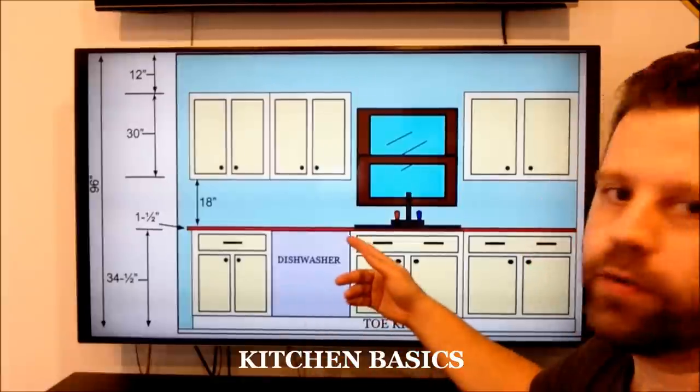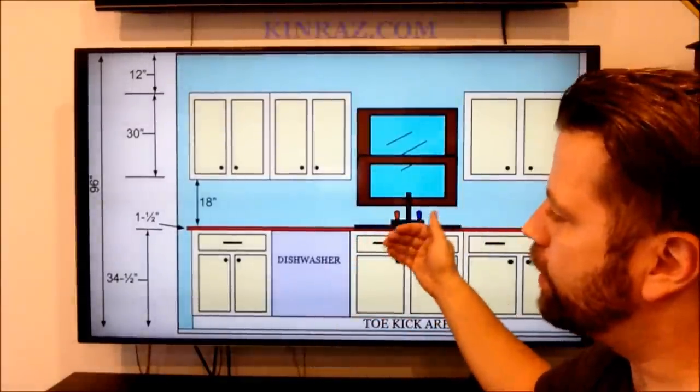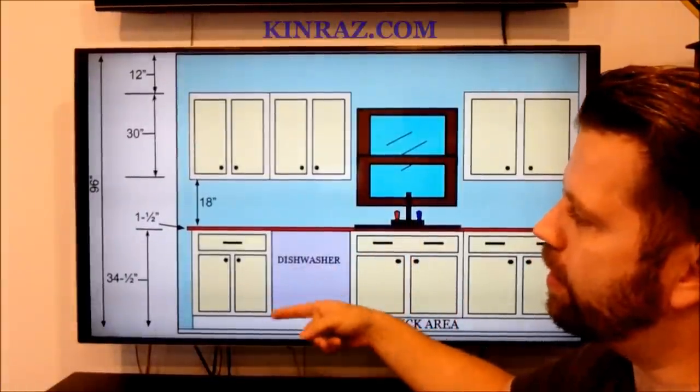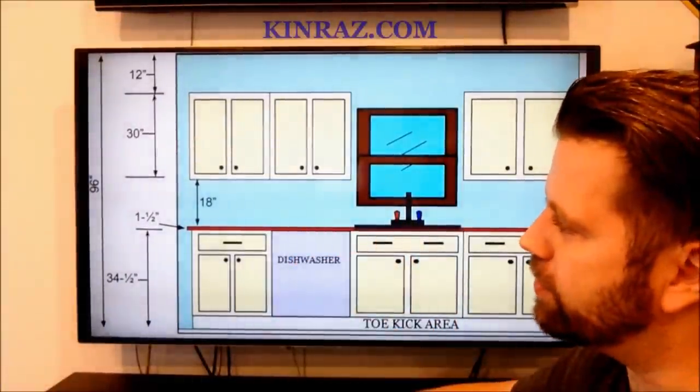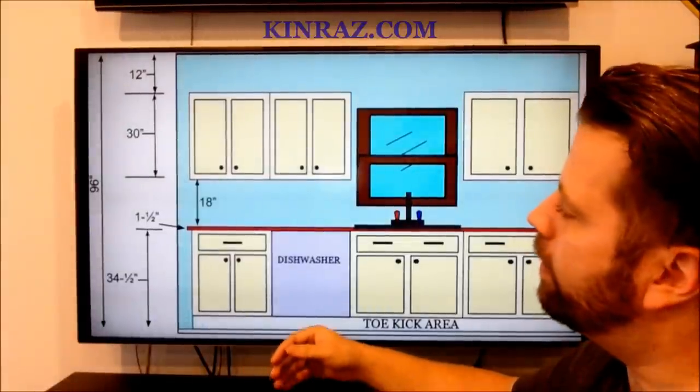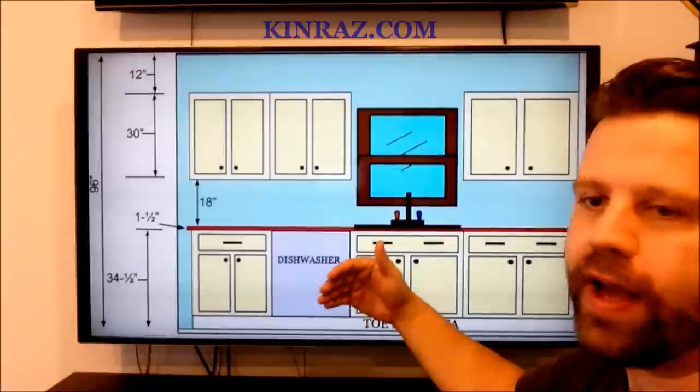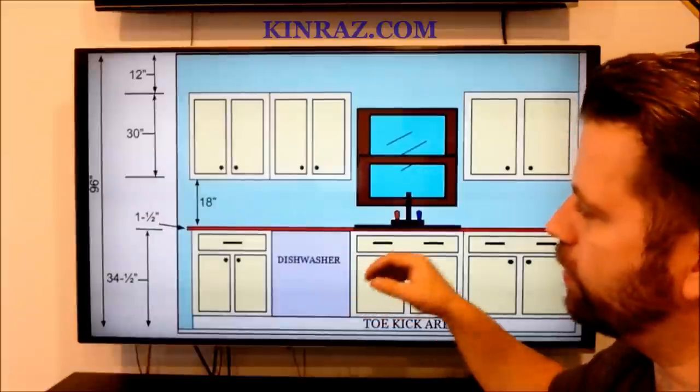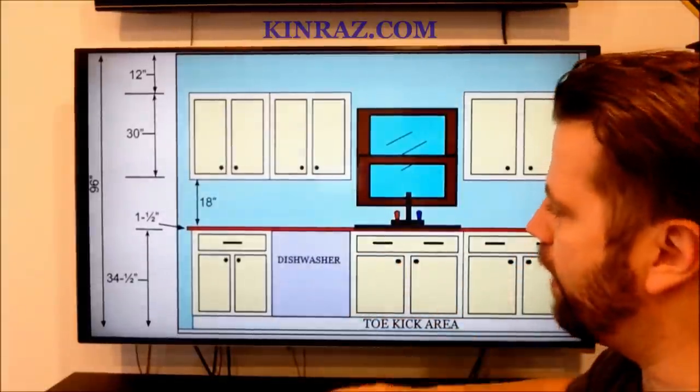Behind me here we have a diagram of just one basic kitchen wall, and you can see over here that the wall is a standard 96 inches, which is eight feet. Now some homes do have nine foot ceilings or ten foot ceilings, but today we're just going to deal with the basics for kitchen cabinets.